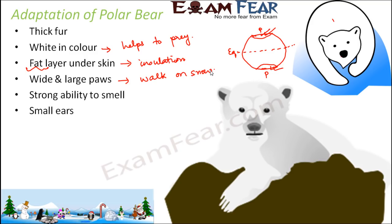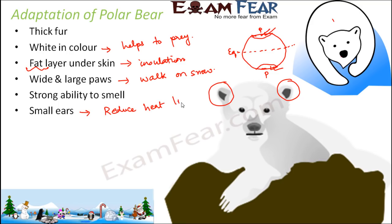Polar bears have very small ears. Small ears reduce heat loss — large ears would allow more heat to escape through the openings, which is undesirable in such cold regions. So small ears help retain body heat. They also have sharp teeth, which help them catch prey and bite and chew food effectively.